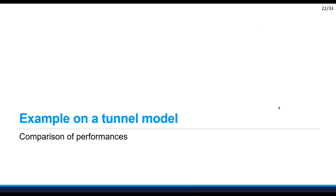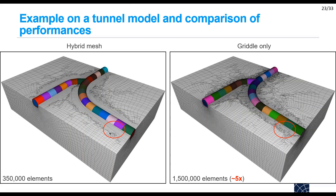I will now show a comparison of performance between a mesh created using only Griddle and a hybrid mesh. The hybrid mesh is on the left and the Griddle-only mesh is on the right. You can see that the hybrid mesh has five times fewer elements than the corresponding Griddle mesh.